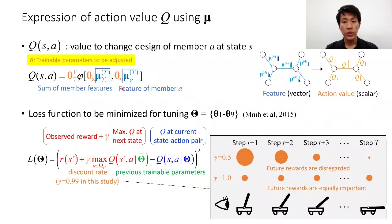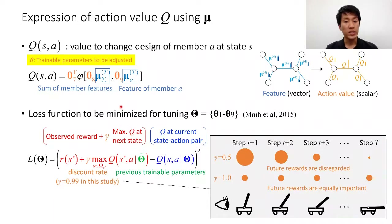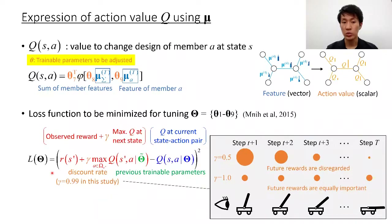Now we can compute Q value estimations, which might not be correct. So the next thing to do is estimating the correct Q value by adjusting the thetas. We can update the thetas by minimizing this loss function. This formulation is the same as the novel deep Q network method and can be solved by an optimization algorithm for neural networks.